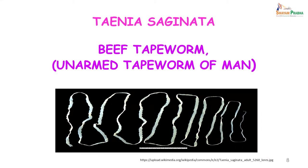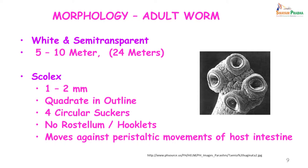Taenia saginata, or the beef tapeworm, is called the unarmed tapeworm of man because the head does not have any rostellum or hooklets. Looking at the morphology of the adult worm: it is white and semi-transparent, 5 to 10 meters in length — 5 to 10 times the length of my arm. The scolex is about 1 to 2 millimeters in size, quadrate, has 4 circular suckers, no rostellum or hooklets, and it moves against the peristaltic movement of the host intestine.